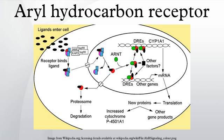In developing vertebrates, AHR seemingly plays a role in cellular proliferation and differentiation. Despite lacking a clear endogenous ligand, AHR appears to play a role in the differentiation of many developmental pathways, including hematopoiesis, lymphoid systems, T-cells, neurons, and hepatocytes. AHR has also been found to have an important function in hematopoietic stem cells; AHR antagonism promotes their self-renewal and ex vivo expansion and is involved in megakaryocyte differentiation.